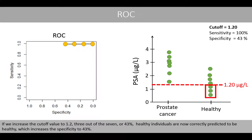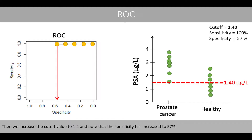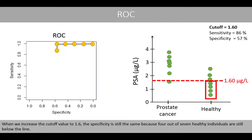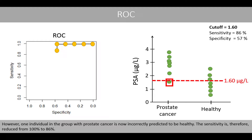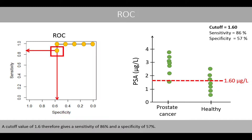Increasing the cutoff to 1.2 results in 43% specificity, and increasing it to 1.4 gives 57% specificity. When we increase the cutoff to 1.6, the specificity remains at 57% since 4 out of 7 healthy individuals are still below the line. However, one individual in the cancer group is now incorrectly predicted to be healthy, reducing sensitivity from 100% to 86%. A cutoff of 1.6 therefore gives 86% sensitivity and 57% specificity.